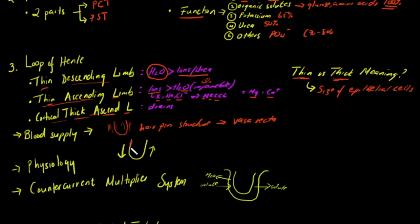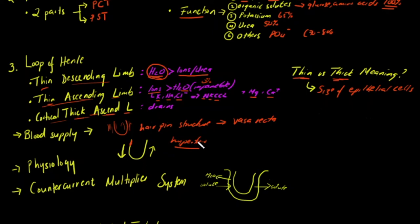Listen carefully: the descending limb receives fluid at about 300 milliosmoles from the proximal convoluted tubule. The key work of the loop of Henle is to make the interstitial tissue of the medulla hypertonic — meaning there is greater solute concentration relative to the filtrate. By actively transporting chloride ions out of the filtrate into the surrounding tissue, the 300 mOsm fluid loses water to the higher concentration outside the loop, increasing tonicity.